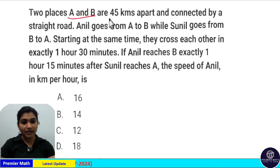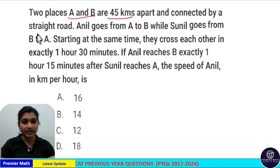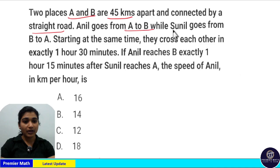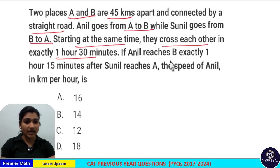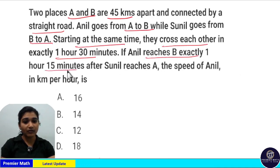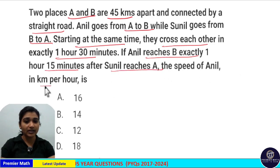Two places A and B are 45 kilometers apart and connected by a straight road. Anil goes from A to B while Sonil goes from B to A. Starting at the same time, they cross each other in exactly 1 hour 30 minutes. If Anil reaches B exactly 1 hour 15 minutes after Sonil reaches A, find the speed of Anil in km per hour.